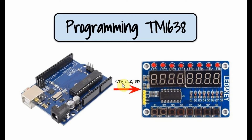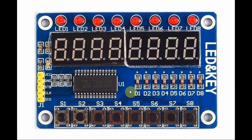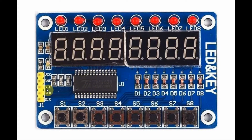The Strobe, Clock, and Data I/O pins are connected to digital pins of the Arduino. The TM1638 IC is a fully programmable LED driver. A microcontroller initiates communication by first sending a low pulse to the Strobe pin, then sending the clock and data through the Clock and DIO pins. Communication is terminated by sending a high pulse to the Strobe pin.